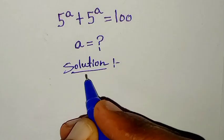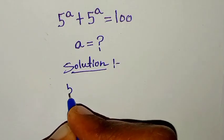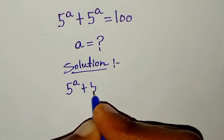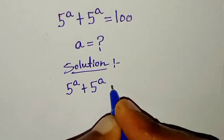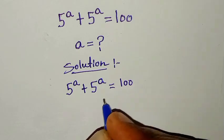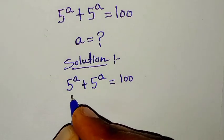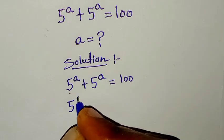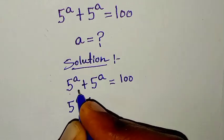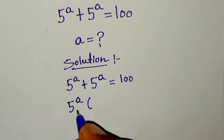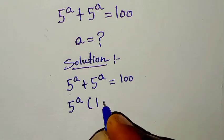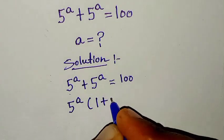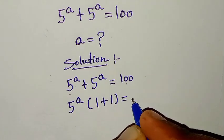Now, solution. From our problem: 5 to the power of a plus 5 to the power of a is equal to 100. 5 to the power of a is common, so we take 5 to the power of a out of the bracket. Then in the next step, 5 to the power of a divided by 5 to the power of a is 1, plus 5 to the power of a divided by 5 to the power of a is 1, in bracket, is equal to 100.